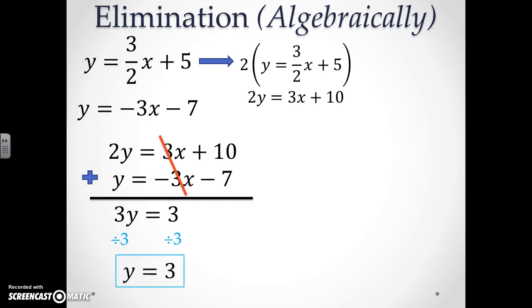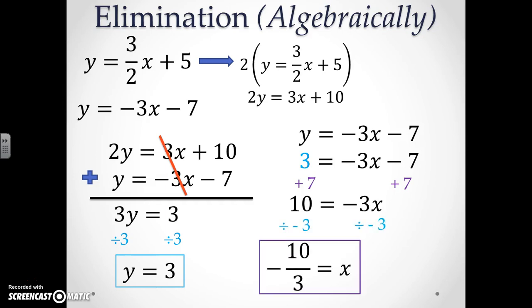In order to finish solving for the system, we must then take the y value of 3 and substitute it into one of our original equations. In this case, I will choose the second equation of y equals negative 3x minus 7. I will then substitute the 3 in for y, add 7 to both sides to get 10 is equal to negative 3x, and then divide by negative 3 in order to get negative 10 thirds as my x value. Therefore the solution to this system of equations is going to be negative 10 thirds comma 3.